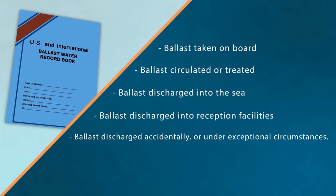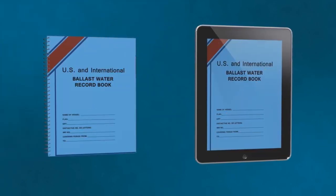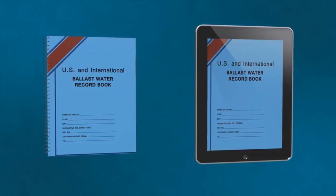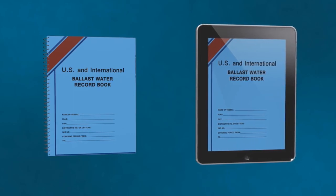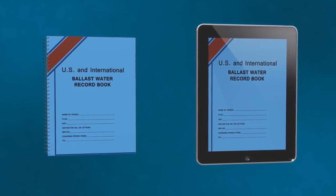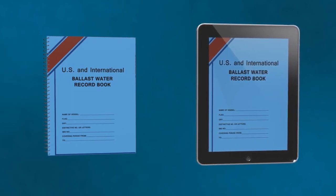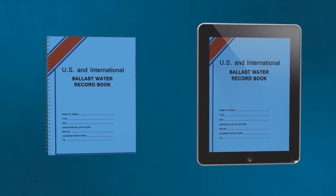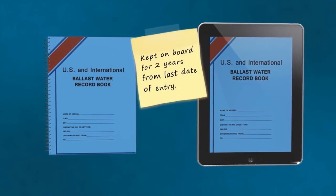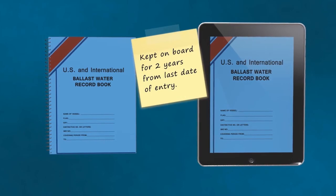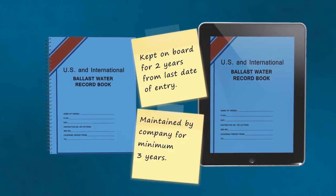The book may be electronic or paper. Every entry must be signed by the ballast water management officer, and every page signed by the master. The record book must be kept on board for two years from the last date of entry, then maintained by the company for a minimum of three years.